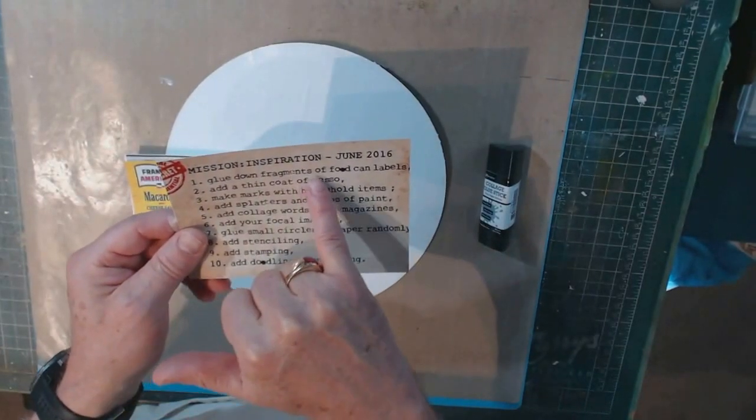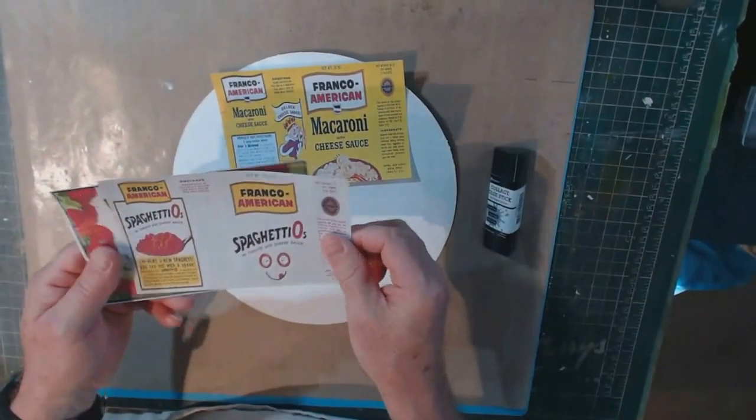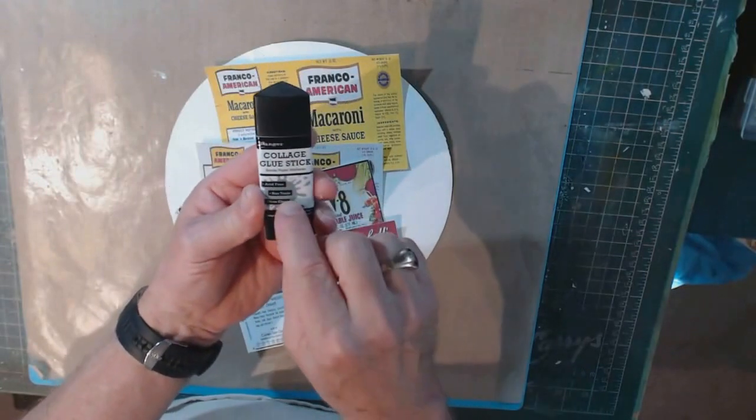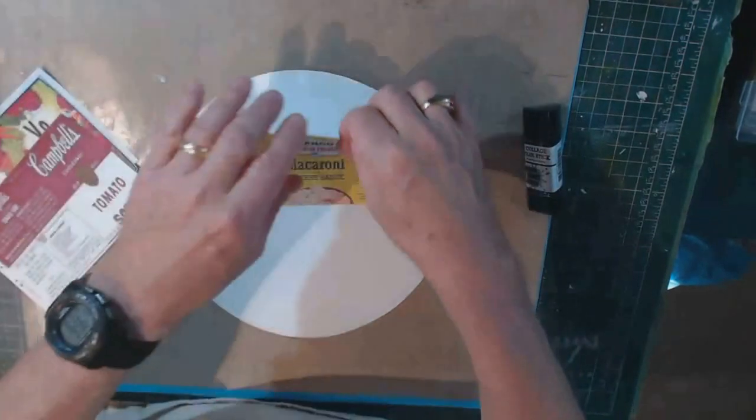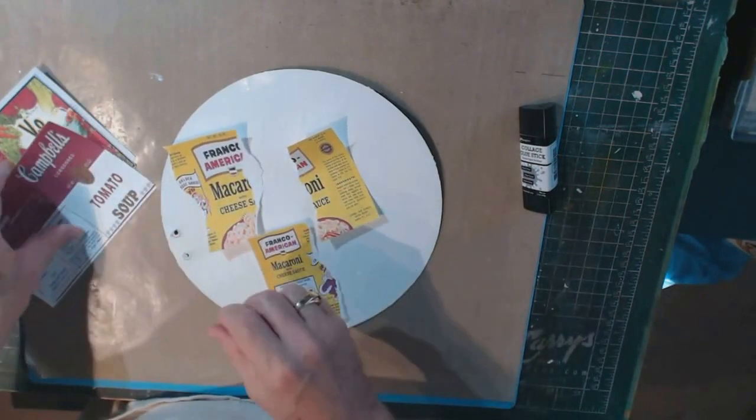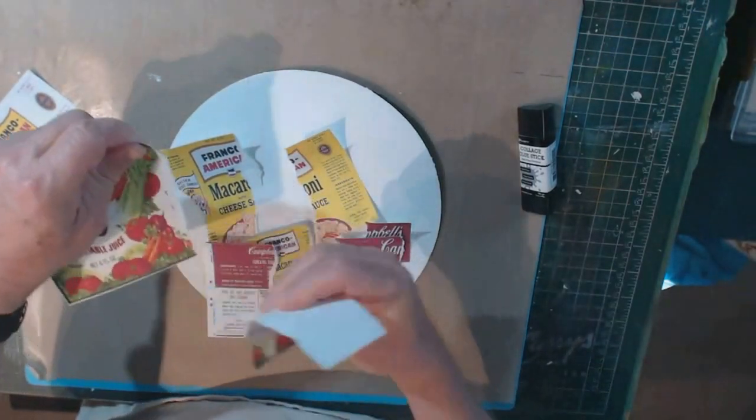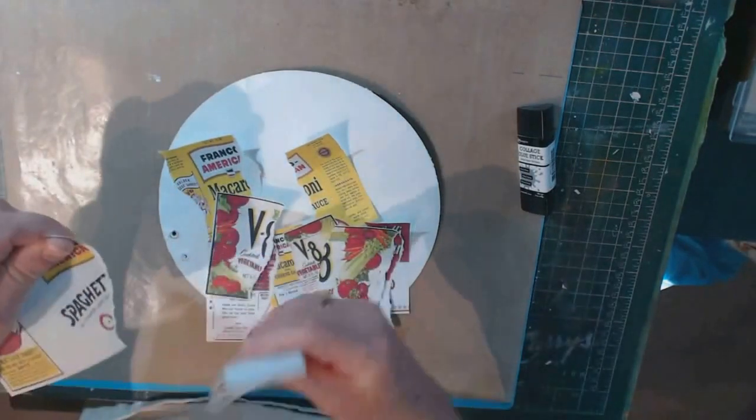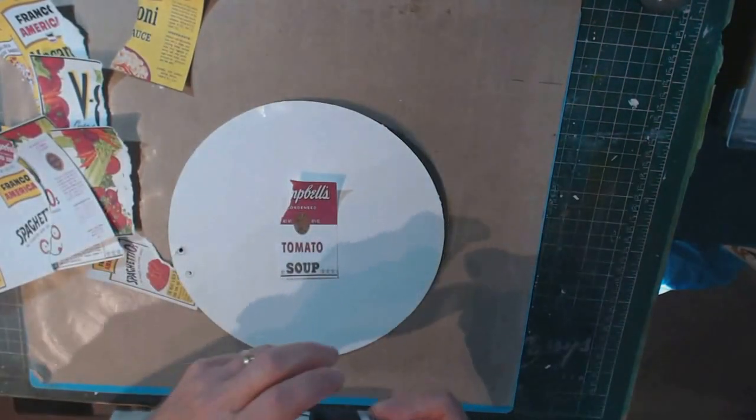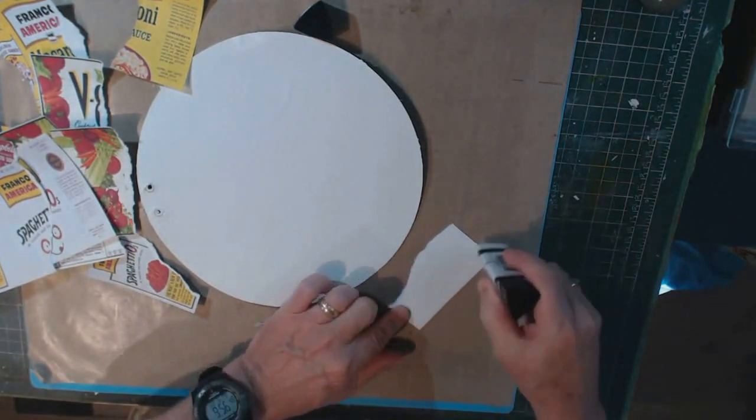Now the first thing on the card says to glue down fragments of food can labels. So what I have here are a bunch of food can labels, but I kind of cheated. I didn't take them off any of my cans. I simply went on to Google, did a search for food can labels, found different images of them and printed them out on my printer. And I'm going to rip them up into pieces. And at first I wasn't really sure how I was going to lay these out, but I thought if I tore them into strips, and then using my collage glue stick from Ranger, I'm just going to glue them all the way around the perimeter of the page, sort of create a border. I'm not too concerned about filling in the middle section of this, because this is where my focal image is going to go, and so there's no need to put a layer of labels under that. So let me speed this up, and you can watch the rest of the process.